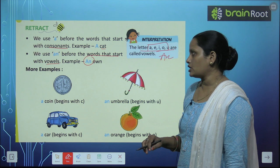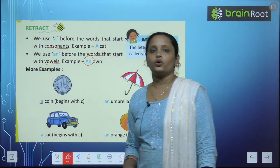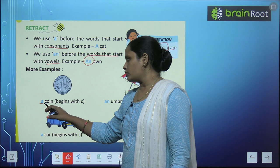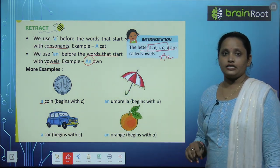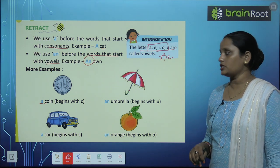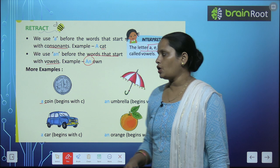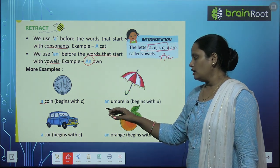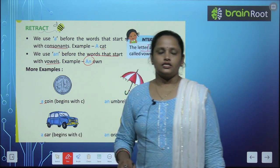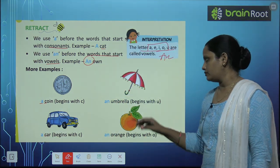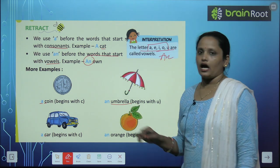Now let's learn about some more examples. A coin — coin का first letter क्या है? C. C क्या है? वो तो एक consonant है, इसलिए लगाएंगे A. A coin. A car — car का first letter है C, consonant है, तो A car. अब next example है Umbrella. Umbrella में पहला letter है U.